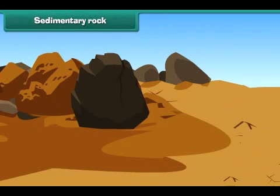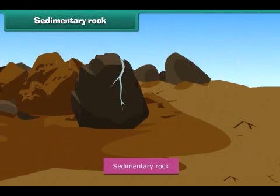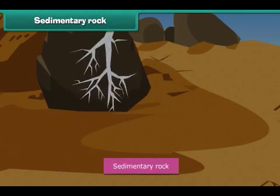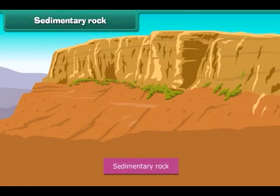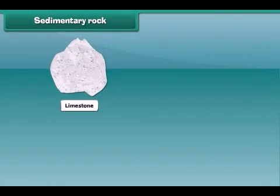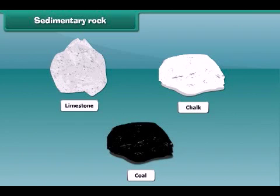Now let's discuss sedimentary rock. Water and air break igneous rocks into smaller pieces, and consequently soil is formed. These pieces settle into layers, then get compressed and harden to finally become sedimentary rock. Sedimentary rock is usually soft to touch. Limestone, chalk, and coal are examples of this kind of rock.